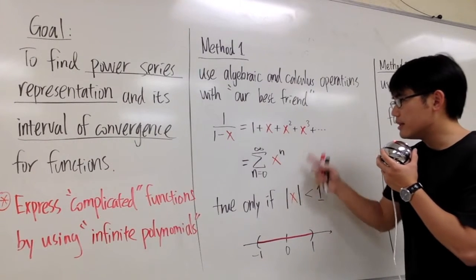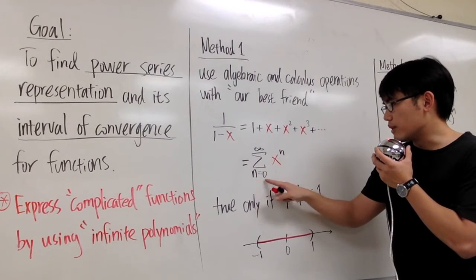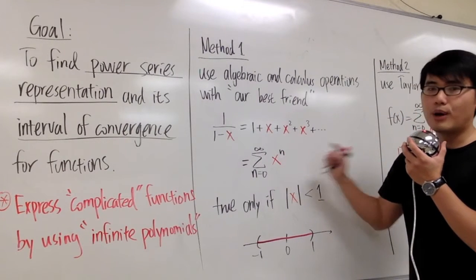And we can also write this by using sigma notation, sigma when n goes from 0 to infinity, x to the n power.